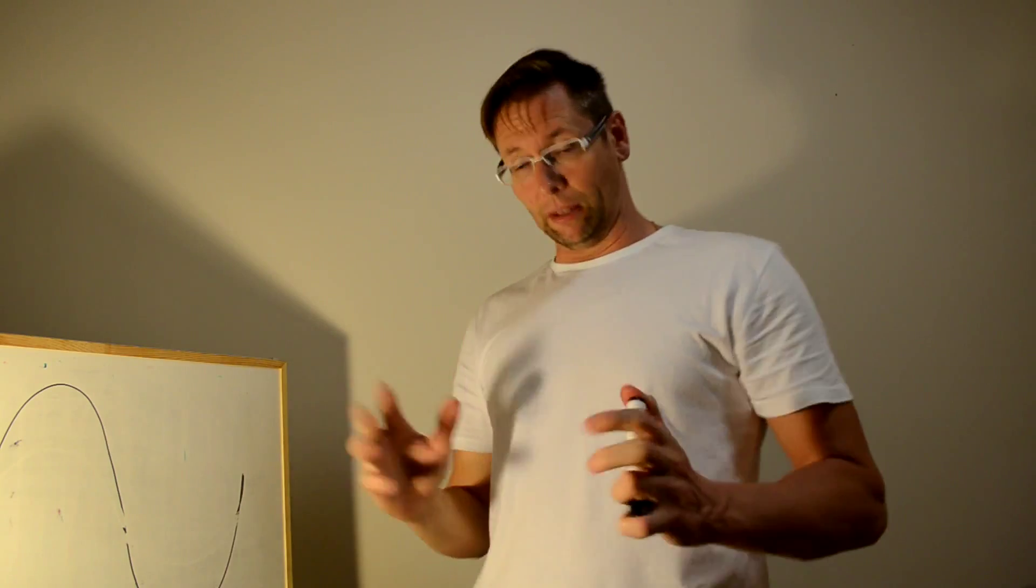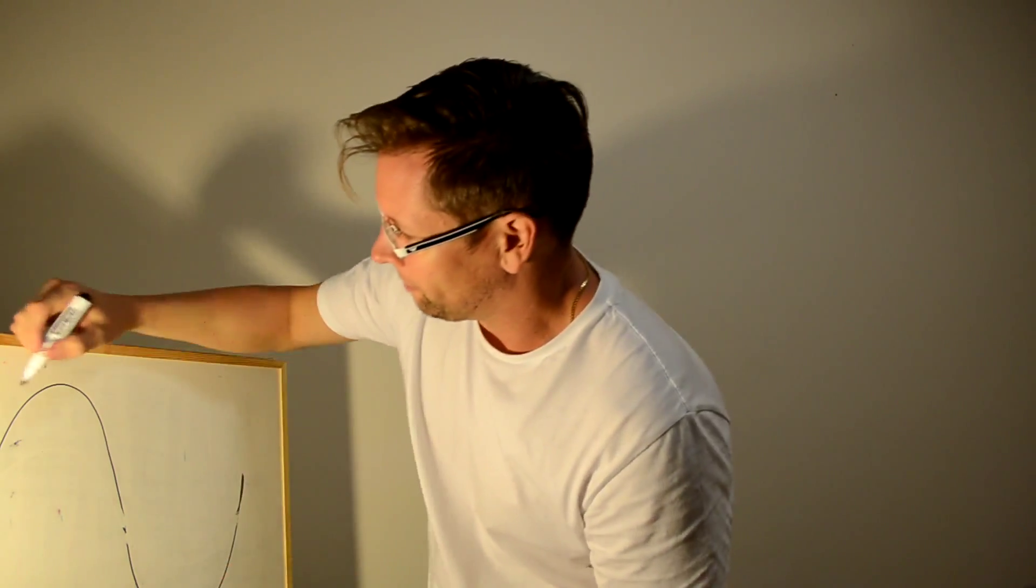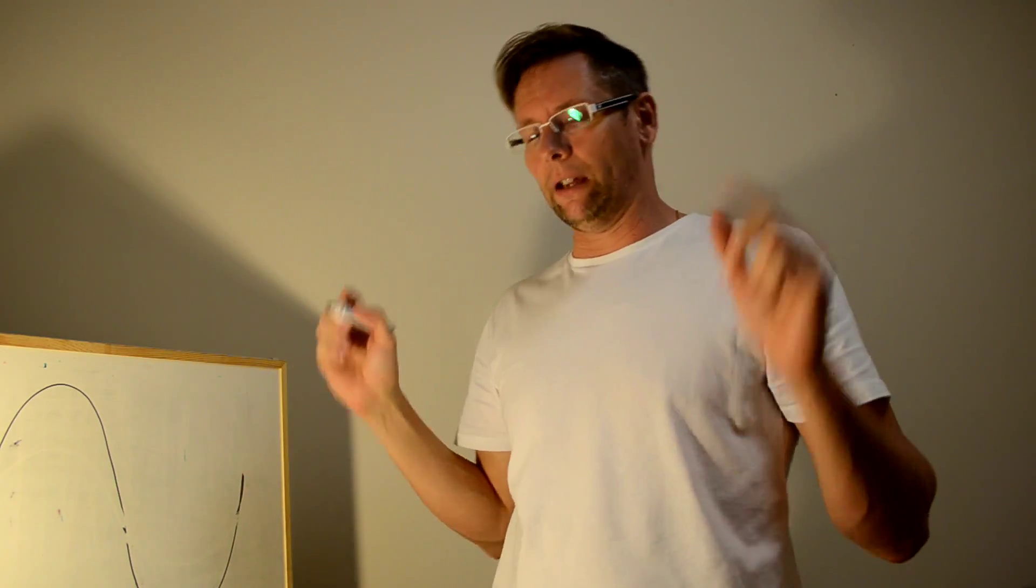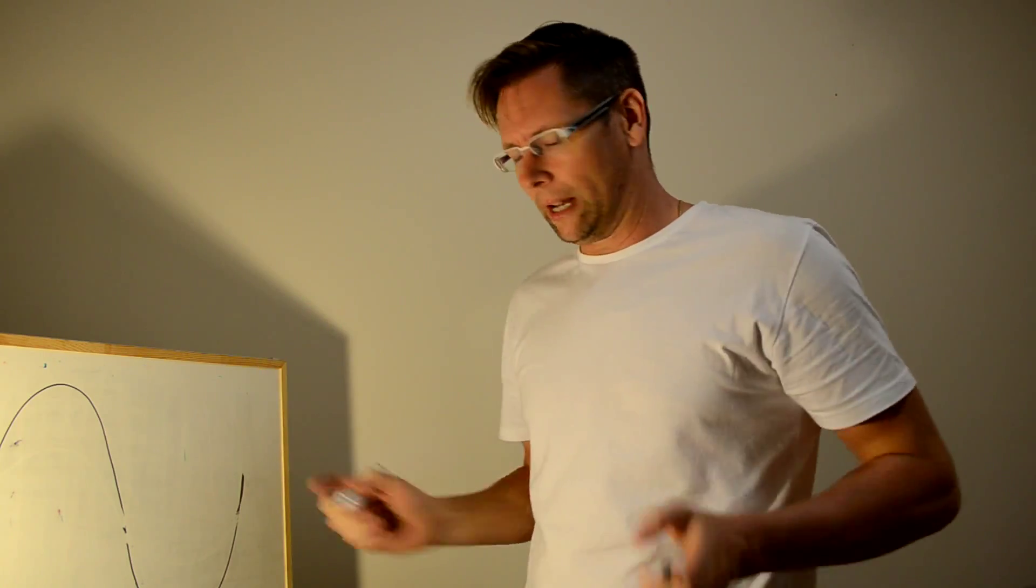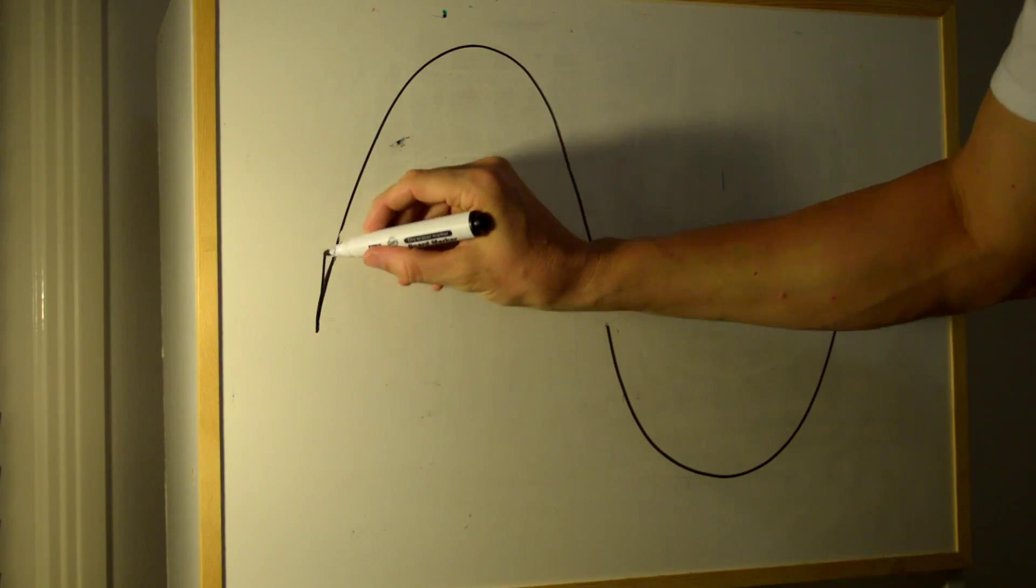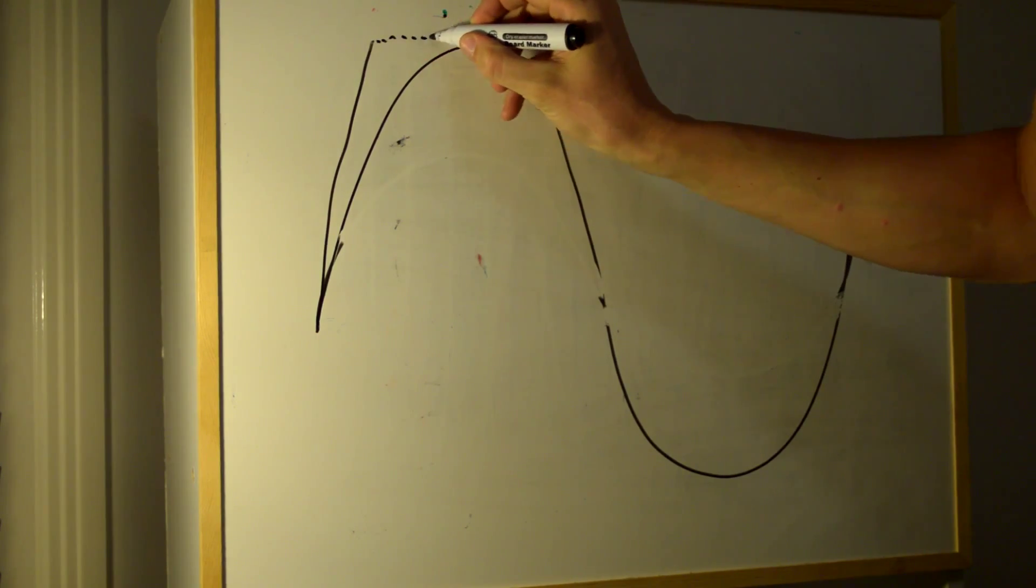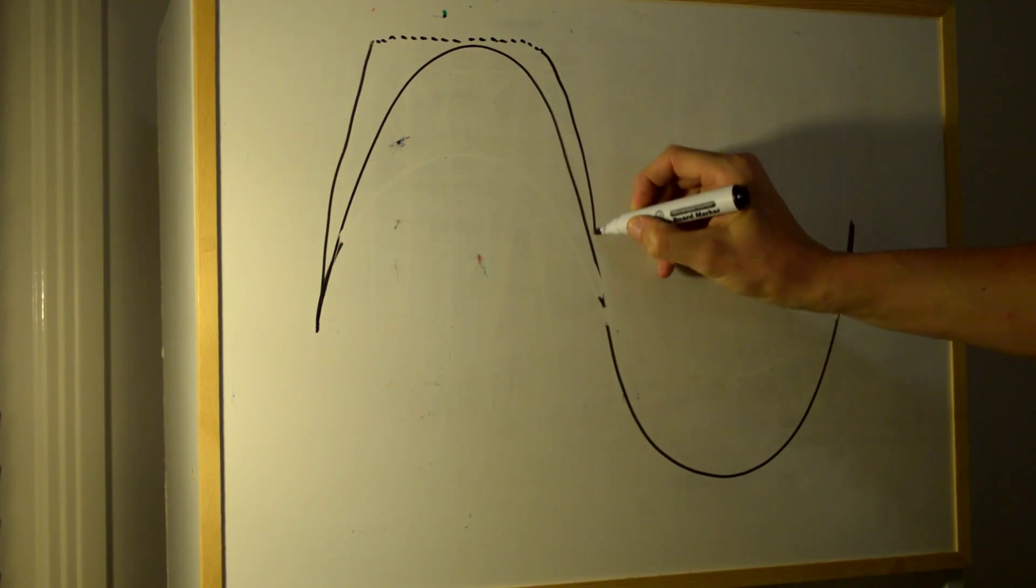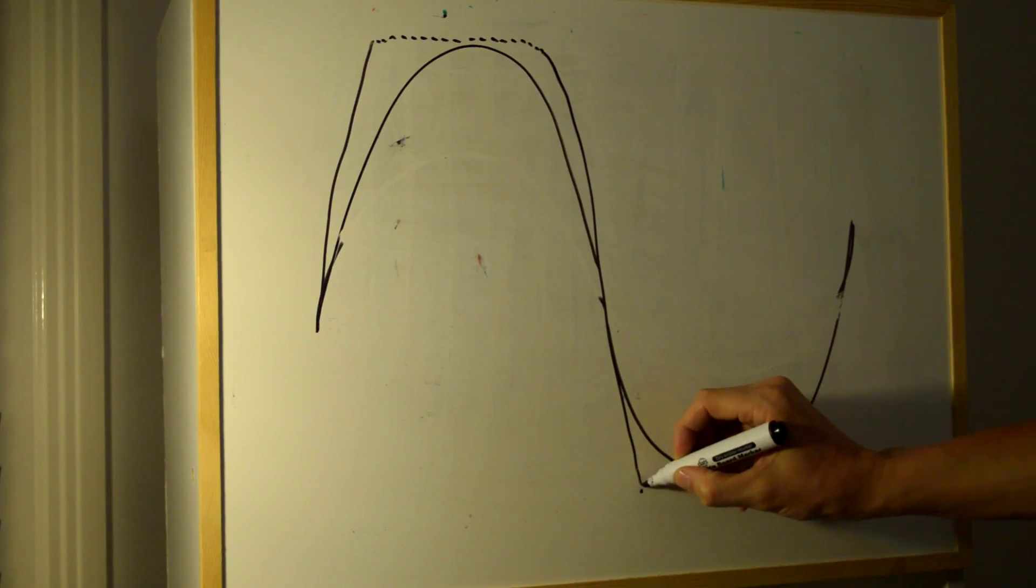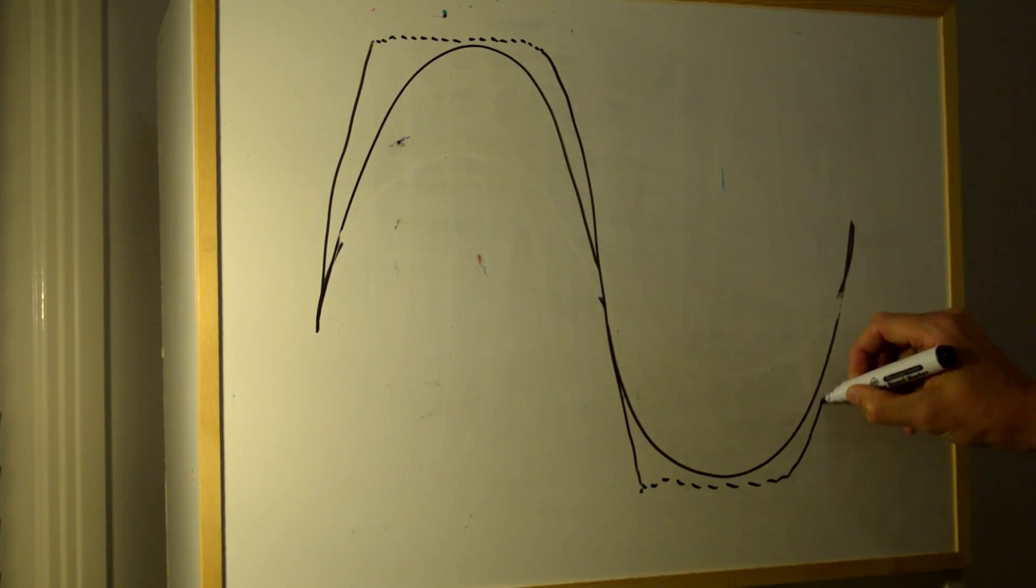But every amplifier has a limit. So let's say this amplifier doesn't go any louder than that. But we try to turn it up anyway. If we turn it up and want it to be up there, but it can't go any higher, so it reaches a maximum, and then it comes down for the other half of the cycle, reaches the maximum that direction, and it starts again.